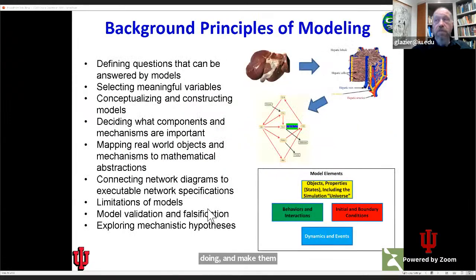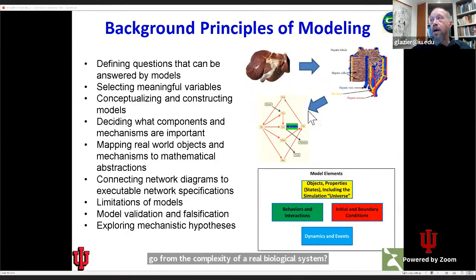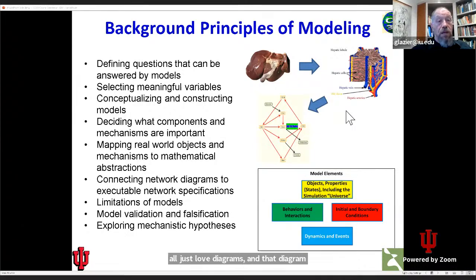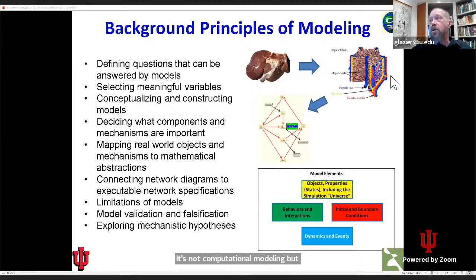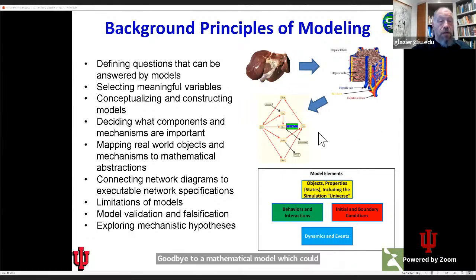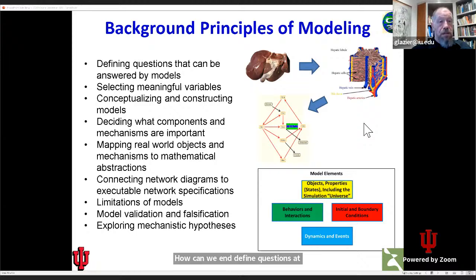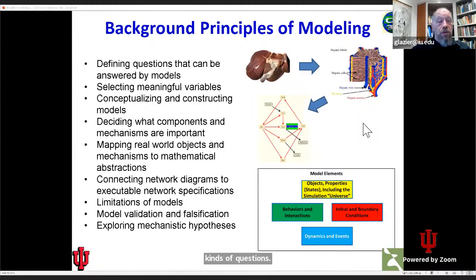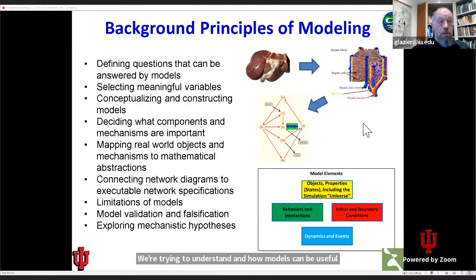The key things in principles of modeling are how do we go from the complexity of a real biological system to an abstraction. Biologists love diagrams, and that diagram represents a critical kind of modeling — not computational modeling, but conceptual modeling. Here I'm showing the architecture flow in the liver to a mathematical model which could represent that flow. How can we define questions that models can answer? Different kinds of models address different kinds of questions, and there may be biological questions that modeling can't help with. So we have to think carefully about what we're trying to understand and how models can be useful.